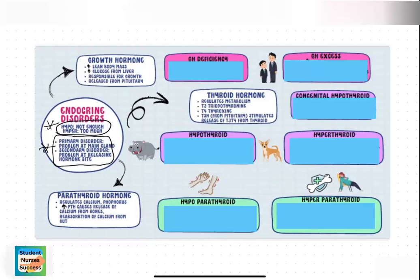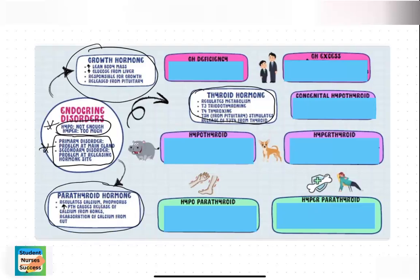In Part 1, we're going to cover growth hormone, thyroid hormone, and parathyroid hormone. What growth hormone does for your body is that it increases lean body mass, increases the release of glucose from the liver, is responsible for tissue growth and overall growth, and it is released from the pituitary gland.